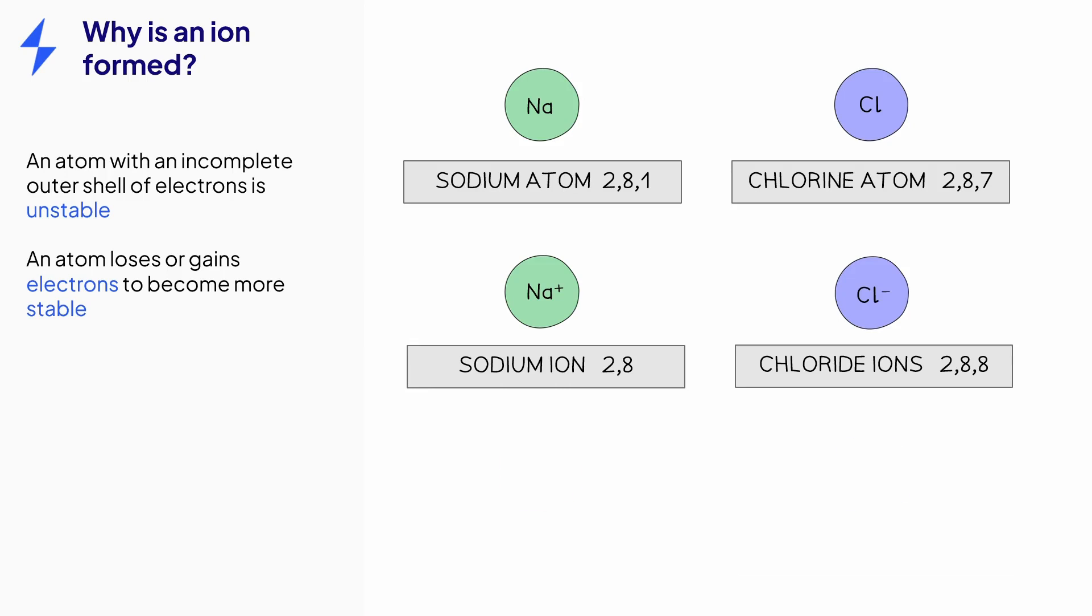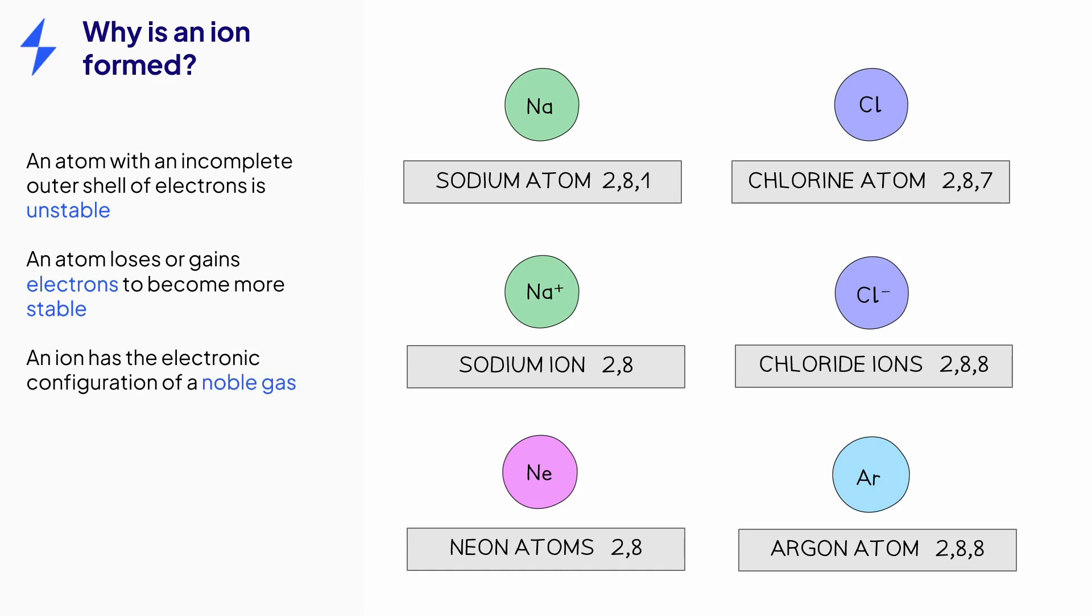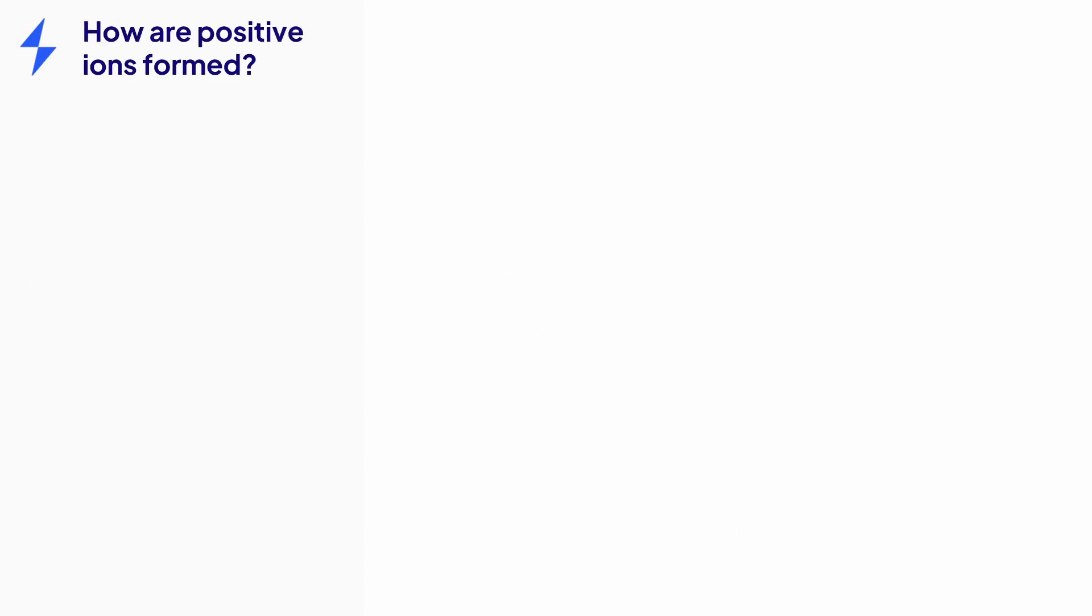Remember that the noble gases, such as neon and argon, have full outer shells of electrons. So we can see that ions have the electronic configuration of a noble gas.